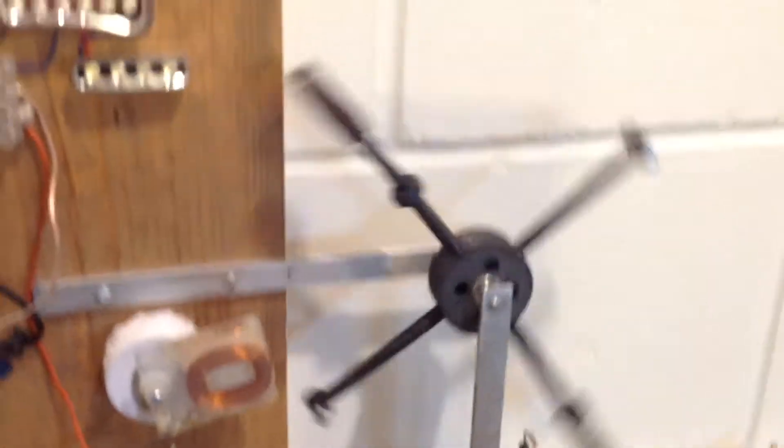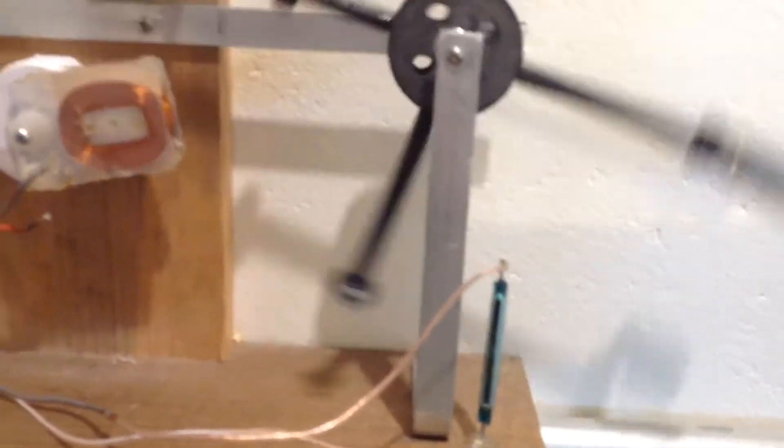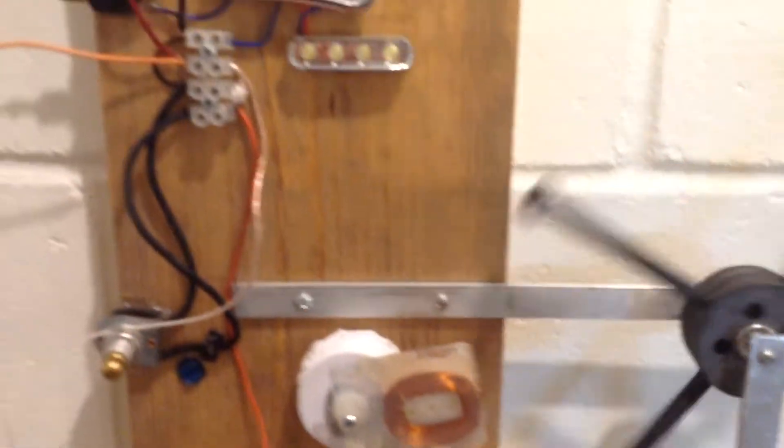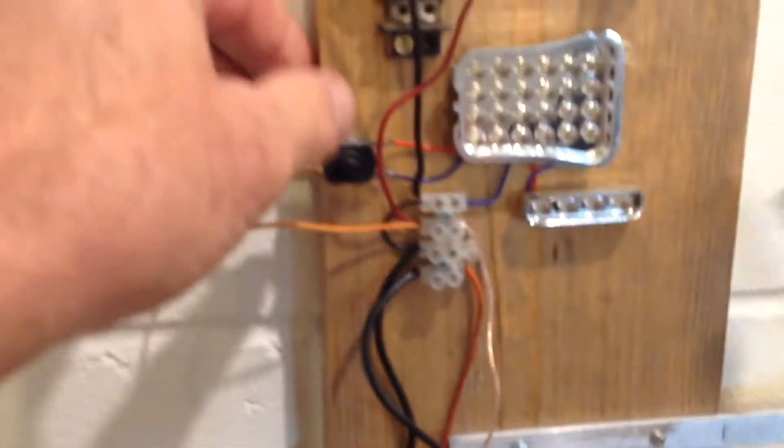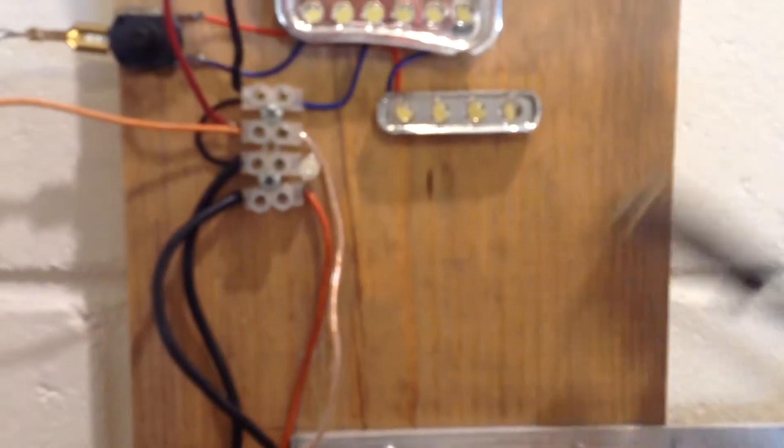That reed switch isn't the one I intended to use, but it's what I ended up using after I broke the other one. There you can see that flyback a little bit better as it pulses that LED.